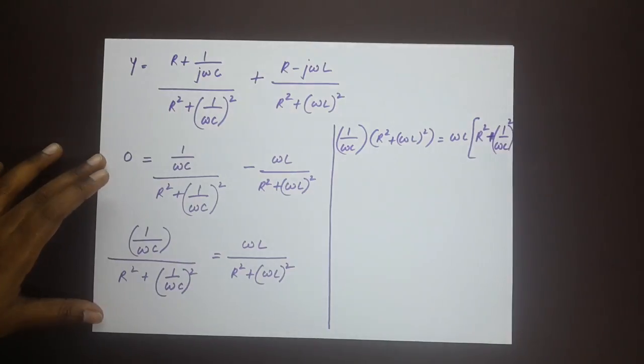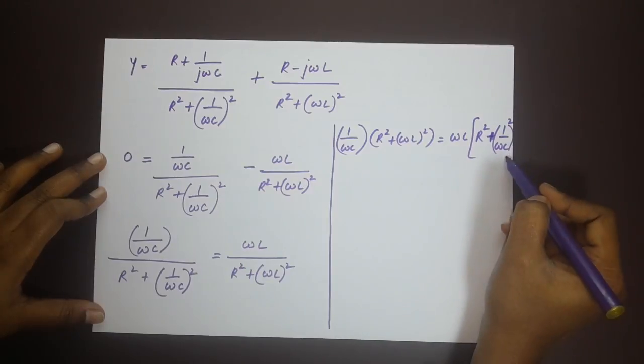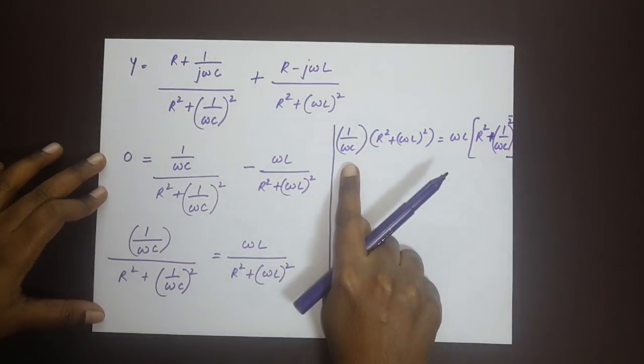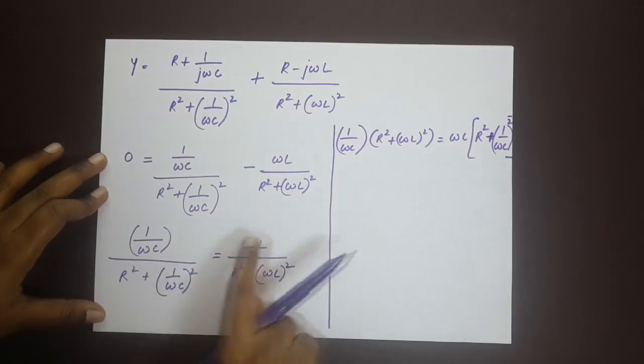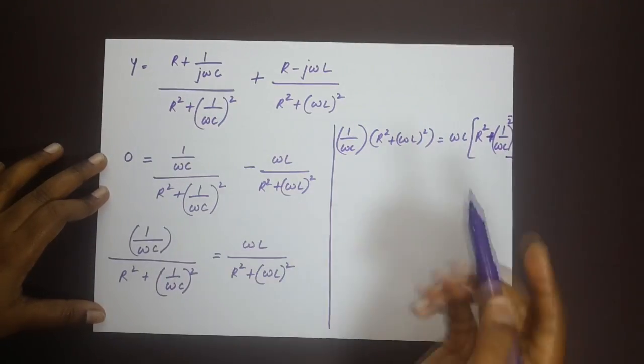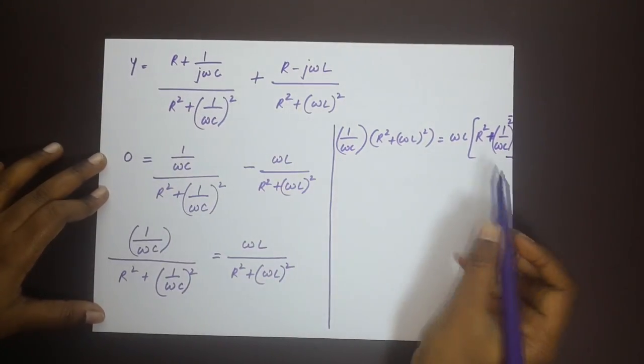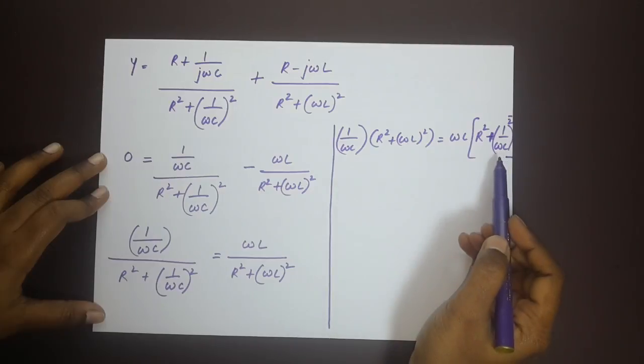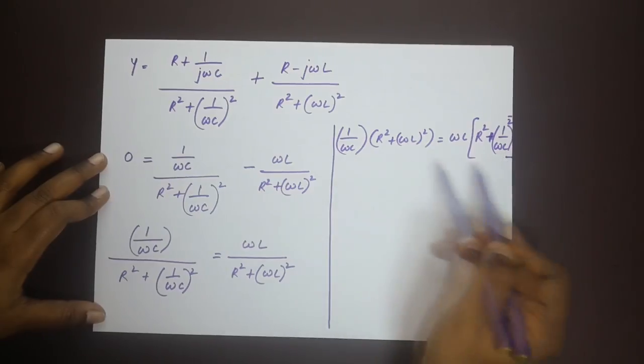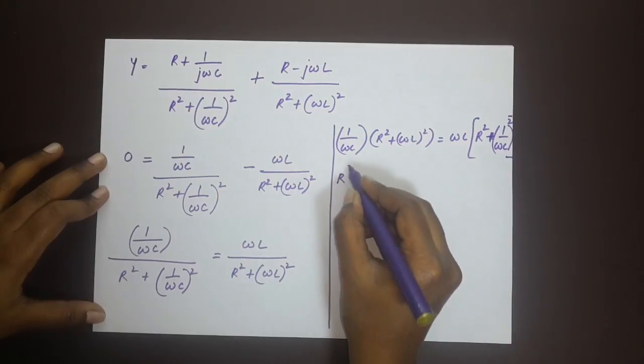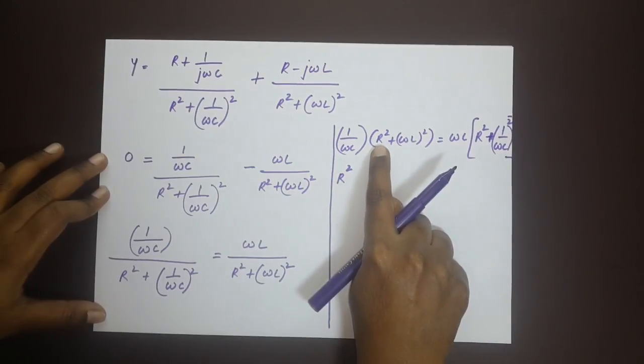I am sorry there is no space here but I hope you can see what I am doing. I have cross multiplied these two terms. Once we do that we can open up the brackets on either sides and multiply it through. What you will see is that you can take R square common.